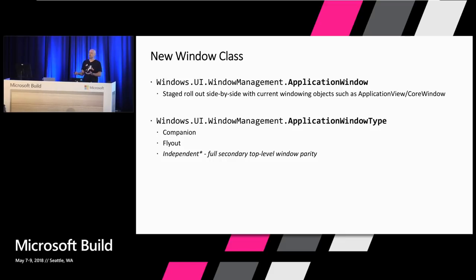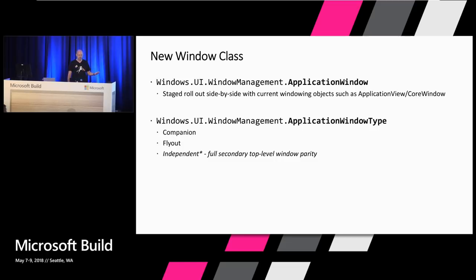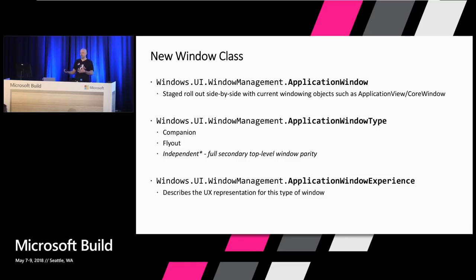The companion window is basically a window that has some complementary content — not a standalone in-of-itself experience. Think of this as, say, a color picker for your paint app. The second is the flyout, which is a lightweight window that is light-dismissible, so you can do things like a contact card pop-out from your application. And there's going to be an independent one, which is a top-level window that works and behaves just like your current main window does today. Each of these has an ApplicationWindowExperience tied to it — this represents the UX, how Windows represents your window in terms of title bar, chrome, light-dismiss behavior, etc.